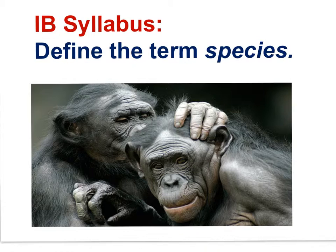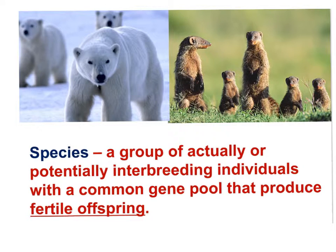Here is our first IB syllabus statement, and it's an easy one: Define the term species. Species is a group of actually or potentially interbreeding individuals with a common gene pool that produce fertile offspring. The phrase 'common gene pool' should make sense in light of the term interbreeding. Keep in mind that a gene pool consists of all the genes and their different alleles present in an interbreeding population.